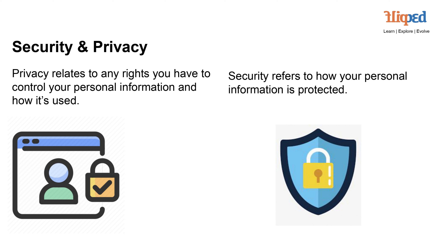Security measures work in harmony with privacy rights to ensure your information remains both confidential and untampered. As we progress in this course, remember that both security and privacy are integral components of a robust cybersecurity framework. Striking the right balance between them ensures a safe and respectful digital environment for all. With that, we've laid the groundwork for understanding the CIA Triad and the distinctions between security and privacy — keep these foundational concepts in mind as we journey further.